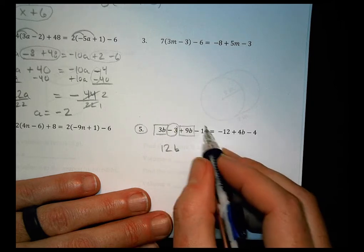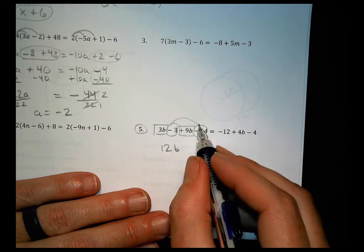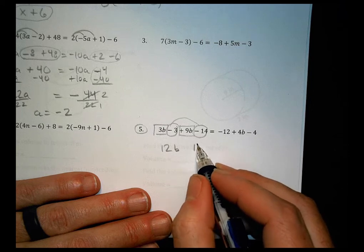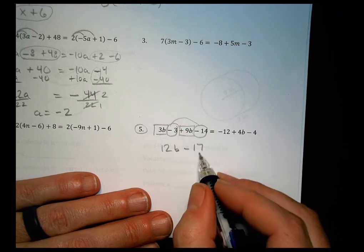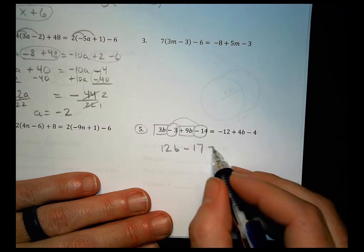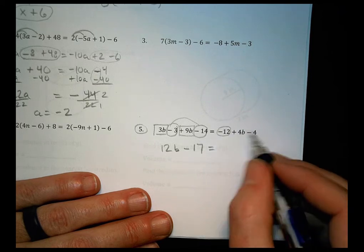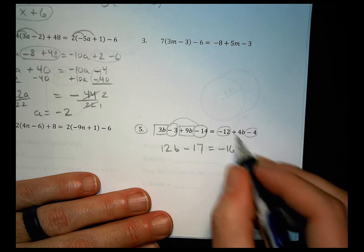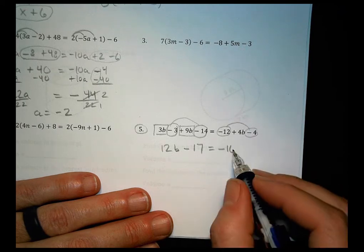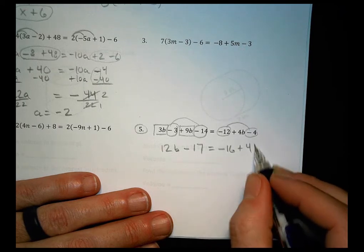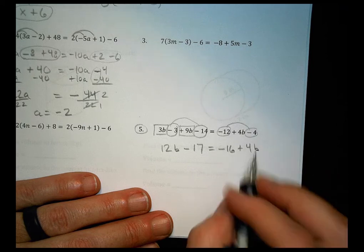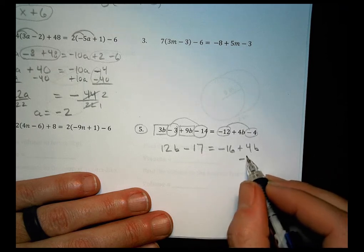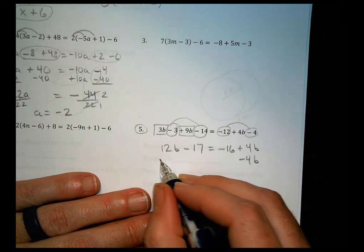Then I have a negative 3 and a negative 14. The signs are the same, so I find the sum and keep the sign the same, so minus 17. On this side, I have a minus 12 and a minus 4, those combine to make negative 16. The 4b is just by itself, 4b.